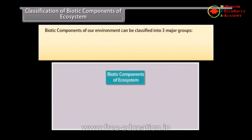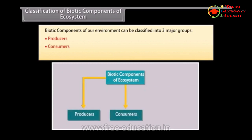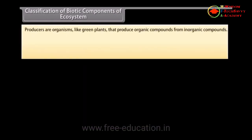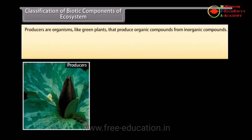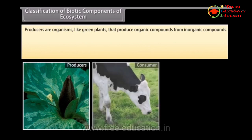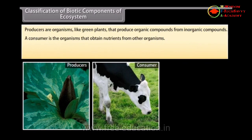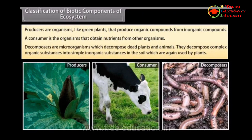Classification of biotic components: Biotic components of our environment can be classified into three major groups — Producers, Consumers, and Decomposers. Producers are organisms like green plants that produce organic compounds from inorganic compounds. A consumer is an organism that obtains nutrients from other organisms. Decomposers are microorganisms which decompose dead plants and animals, breaking complex organic substances into simple inorganic substances in the soil, which are again used by plants.